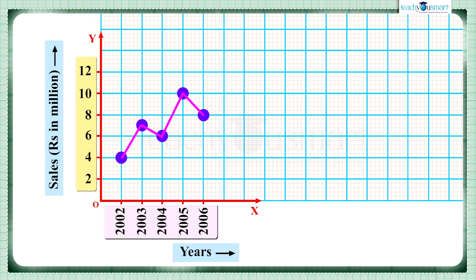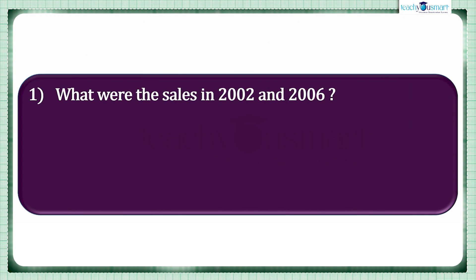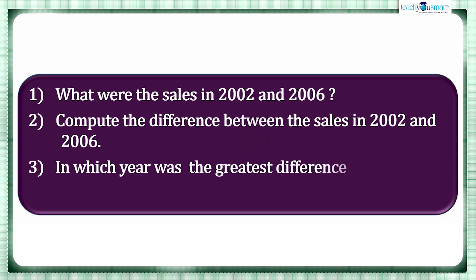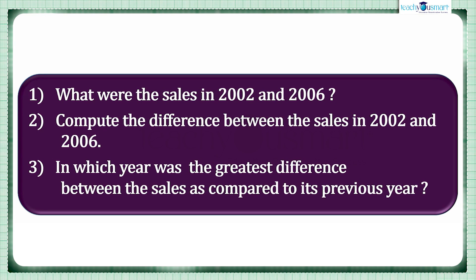The following line graph shows the yearly sales figures for a manufacturing company. Observe the graph carefully and answer the following questions: What were the sales in 2002 and 2006? Compute the difference between the sales in 2002 and 2006. In which year was the greatest difference between the sales as compared to its previous year?